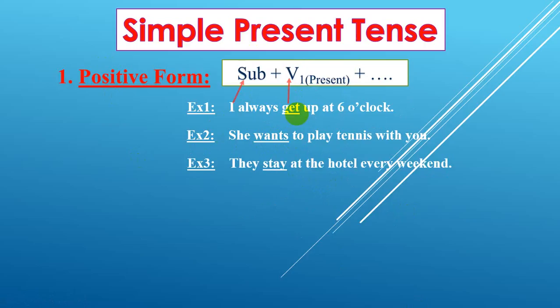That's why we add S here. Example number three: they stay at the hotel every weekend. Subject is 'they', verb is 'stay' — verb one. So that's all for the positive form. Now let's go to the next one: number two, negative forms.